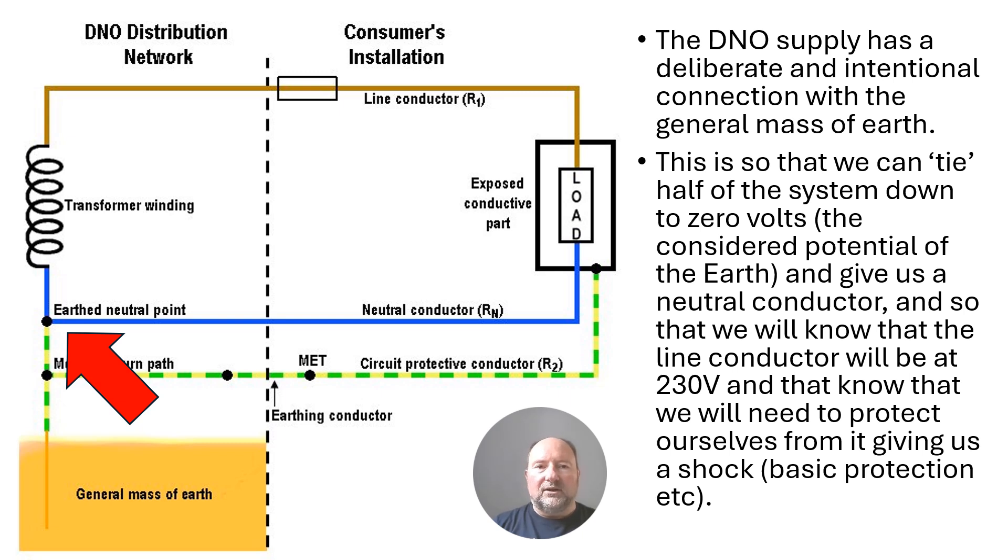Since that we know that the line conductor is at 230 volts, we know that we need to protect ourselves from it by things like insulation of live parts, barriers and enclosures, placing out of reach and obstacles.